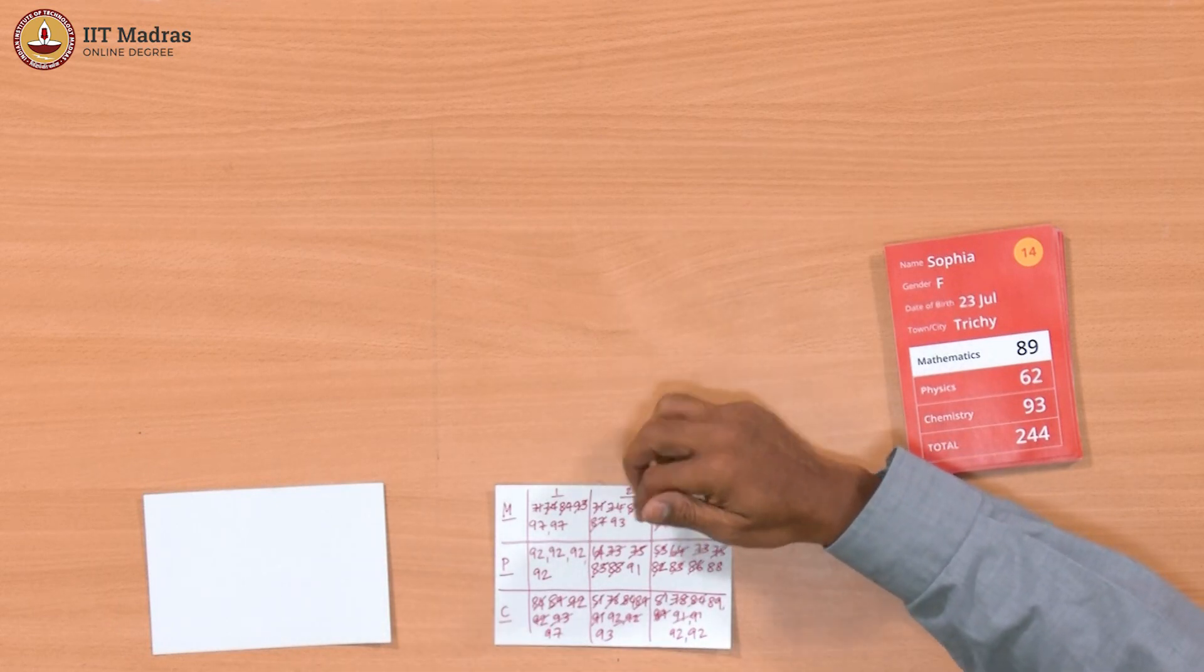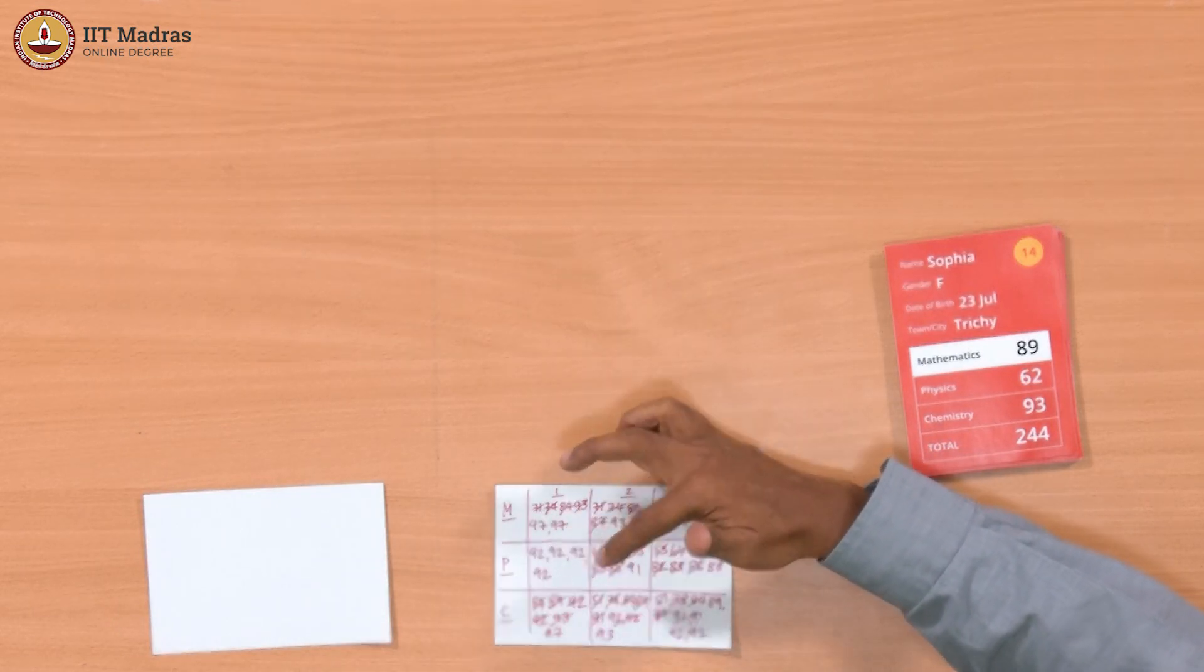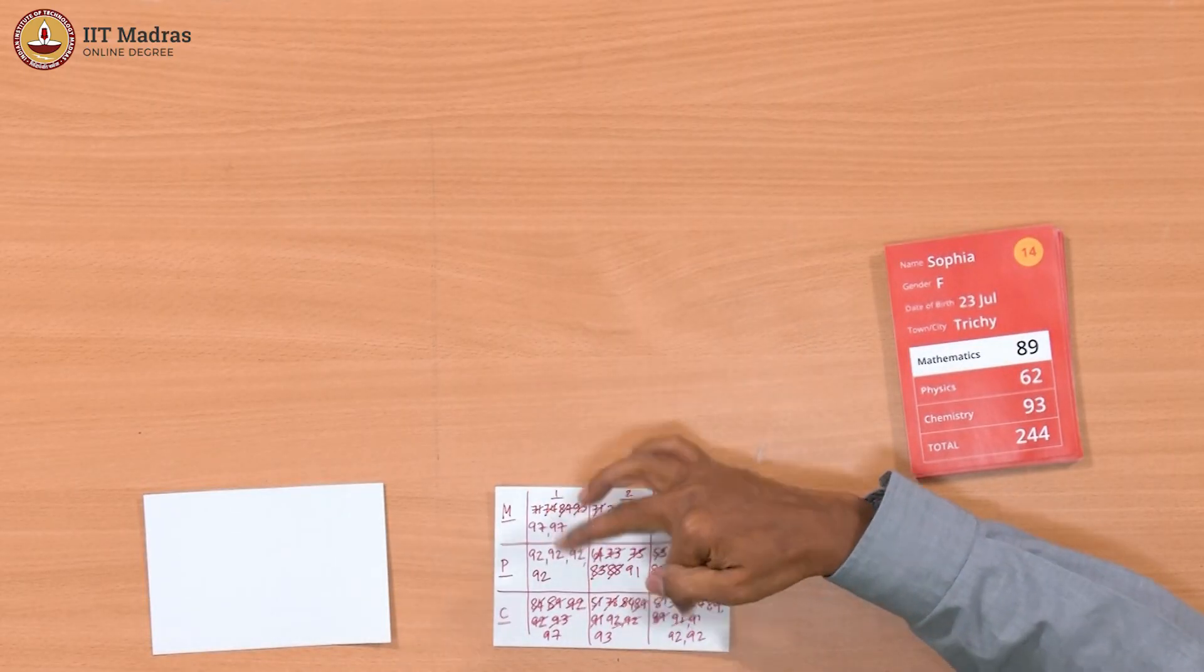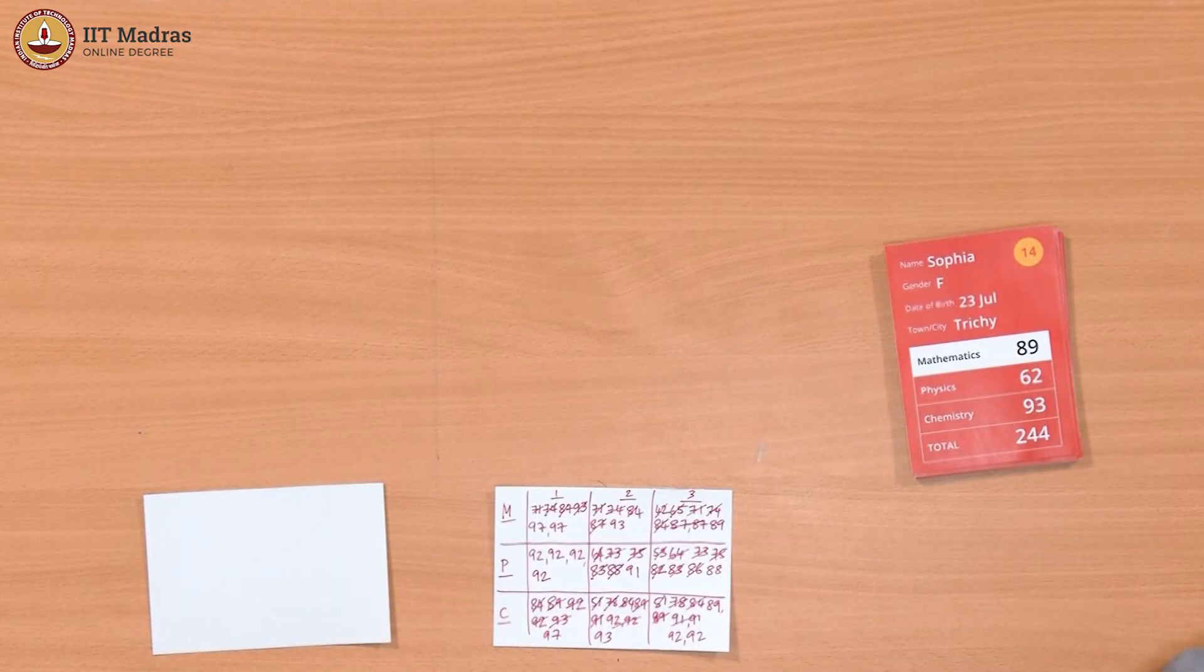And we have a physics set - people who got in physics 92, 91, or 88. And then we have a chemistry set - 97, 93, or 92 in chemistry. Now, we want to check whether this intersection of these three sets is empty or not. I suspect that at least one student will be there, maybe two.